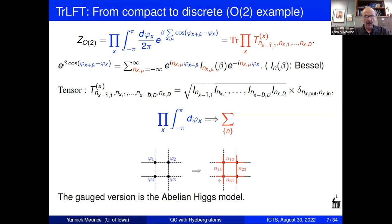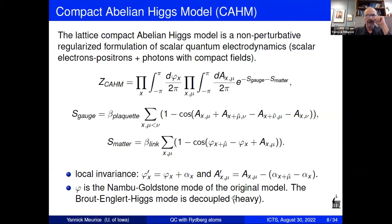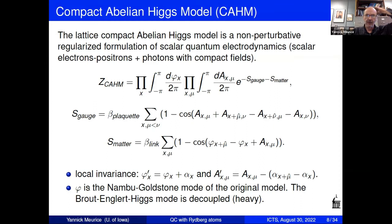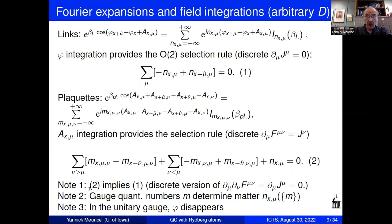You can make a gauge version of this, which is the Abelian Higgs model. You add a gauge field in the gradient, put in a plaquette term, so it has the usual local gauge invariance with the gradient replaced by a discrete gradient on the lattice. The phi field is just the Nambu-Goldstone mode. The Higgs mode has been decoupled — the hard mode has been made very hard — so it is not present in this model, despite the name Compact Abelian Higgs model.